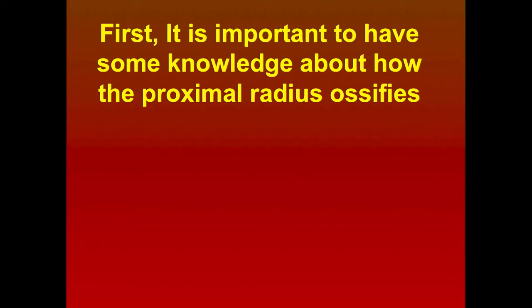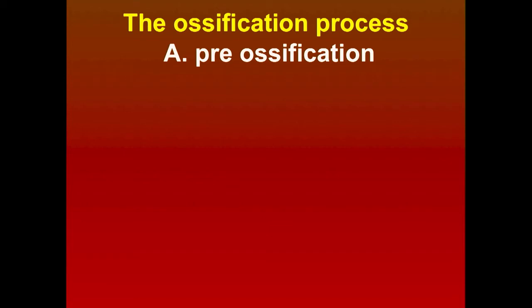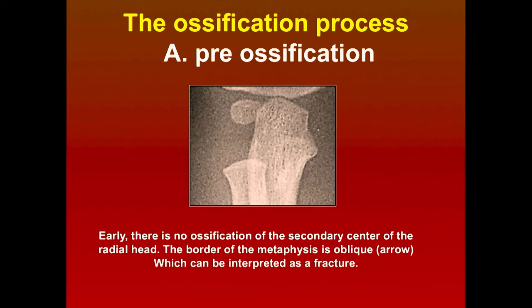You really need to have knowledge about how the proximal radius ossifies, and there are also some anatomical considerations. In the pre-ossification stage, the metaphysis is angulated a little bit, and I've seen situations where that was interpreted as a fracture. The secondary center of the radial head has no ossification, and the border of the metaphysis is oblique — sometimes this can look like a torus fracture. You have to consider that's a normal variation of the metaphysis.